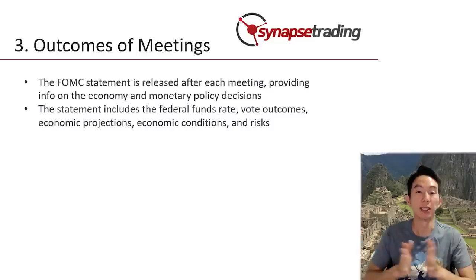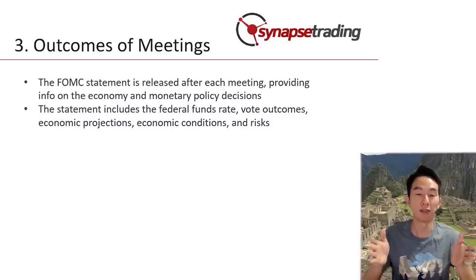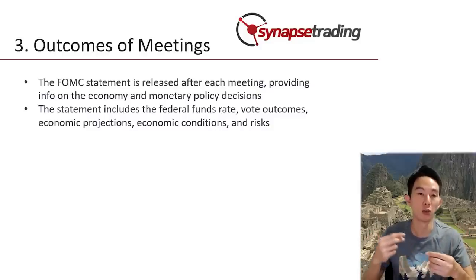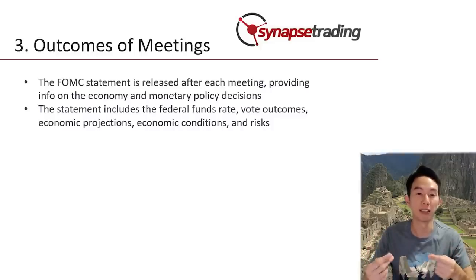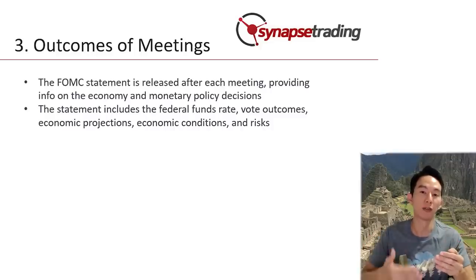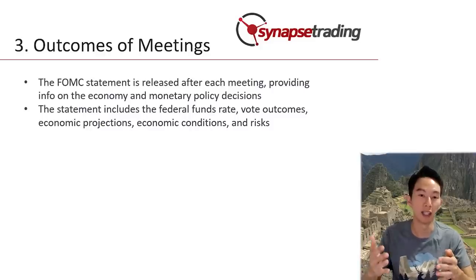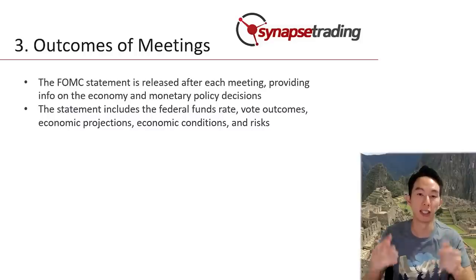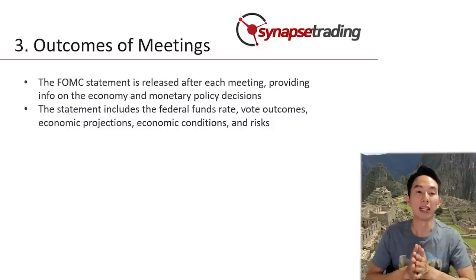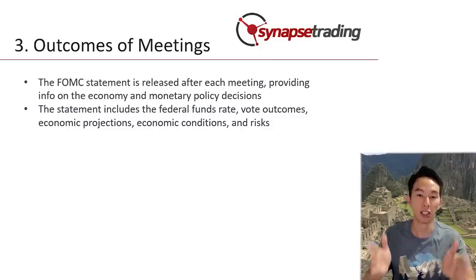The FOMC statement typically includes the following information: the current target range for the Federal Funds Rate, which is the interest rate at which banks lend money to each other overnight; the outcome of the vote, including any dissents; economic projections, including the expected path of interest rates, GDP, unemployment rate, and inflation; an assessment of the current economic trends and the balance of risk; and lastly, any other relevant information, such as changes to the statement language or forward guidance.